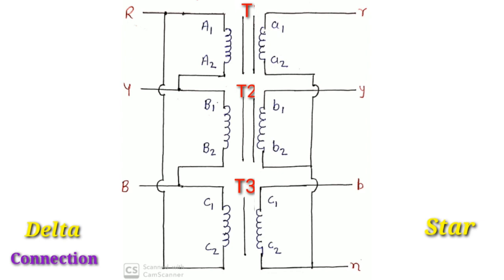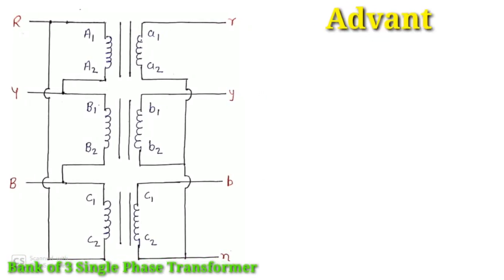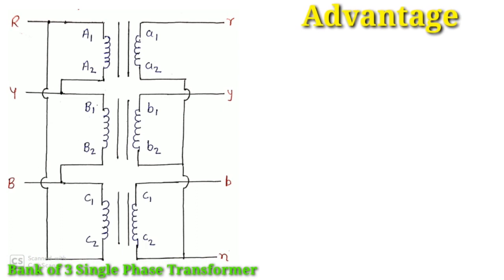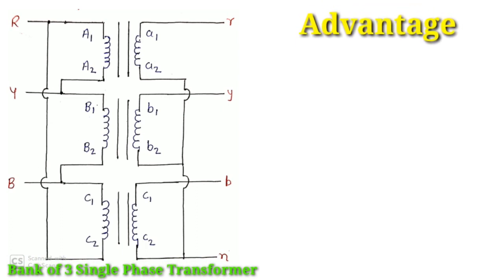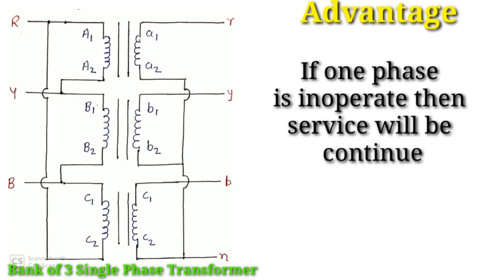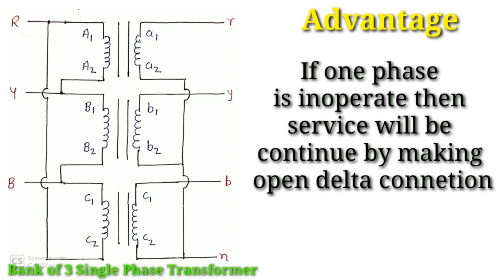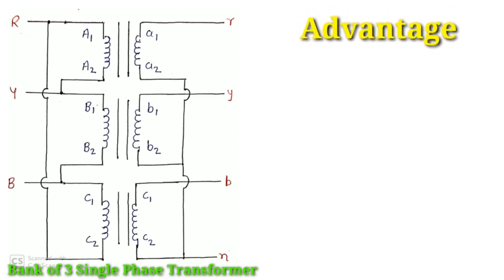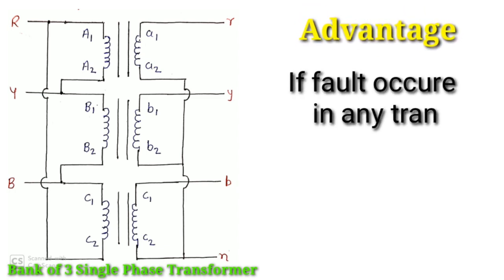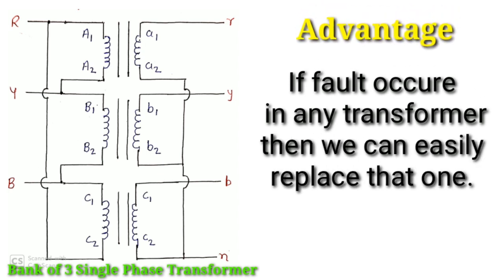With this connection, a bank is formed which is connected in delta-star. After forming this bank, the main advantage is that if one phase becomes inoperable or stops working, we can continue service by making an open delta connection. If a fault occurs in any one transformer, we can remove and repair or replace that transformer.